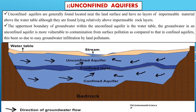Unconfined aquifers are situated close to the earth's surface, making them easily accessible for water extraction. Unlike confined aquifers, they do not have any impermeable layer above them, which allows water to move freely into and out of the aquifer from the surface. Despite the absence of an impermeable upper layer, unconfined aquifers are underlain by an impermeable layer that prevents water from moving downward beyond that point. The uppermost boundary of groundwater within the unconfined aquifer is the water table.